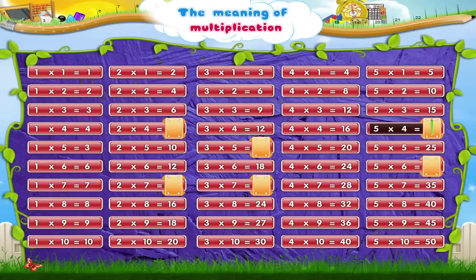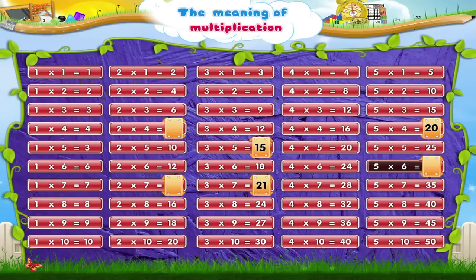Five fours are — Twenty. Three fives are — Fifteen. Three sevens are — Twenty-one. Five sixes are — Thirty. Two fours are — Eight. Two sevens are — Fourteen. That was very quick, Starry.